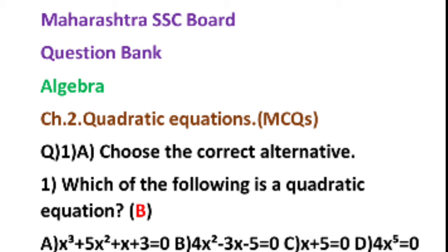The second option has 4x square, so you can take this. But let us check the other equations also. The third one is x plus 5, so there is no x square term — it is not a quadratic equation; it is a linear equation. The last one has 4x raised to 5, so 5 is the degree. You should not take A, C, and D. You have to take equation B: 4x square minus 3x minus 5 is equal to 0. That is a quadratic equation. The answer B is shown above near the question in red color.